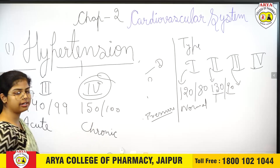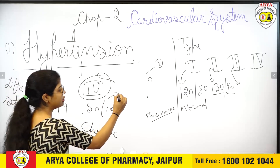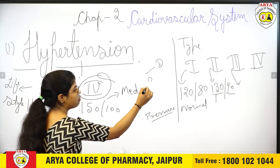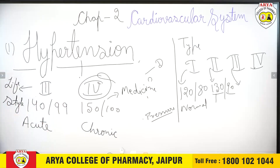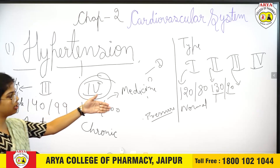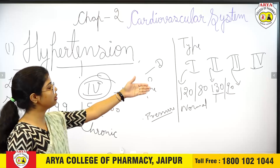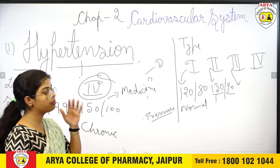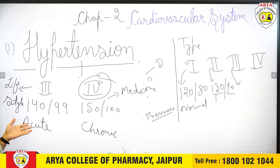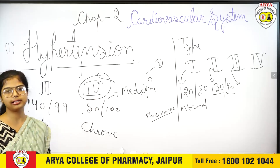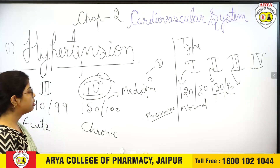In chronic hypertension (type 4), we need anti-hypertensive medicines. To summarize: type 1 is normal (120/80); type 2 is 130/90, called pre-hypertension; type 3 is acute hypertension (140/99); and type 4 is chronic hypertension (150/100), which requires medicines to cure.